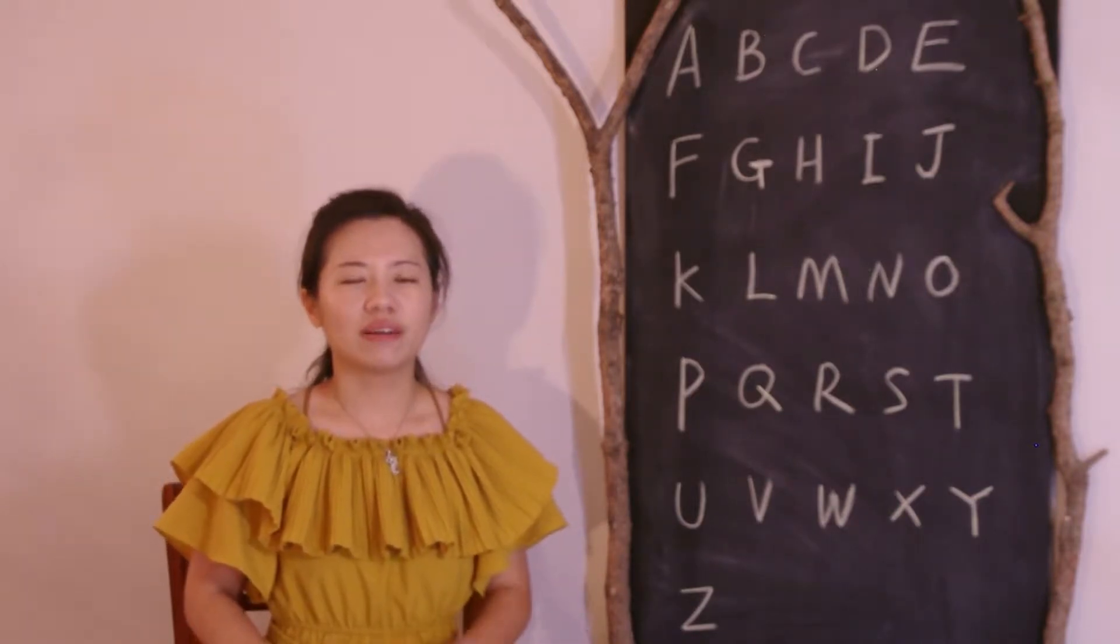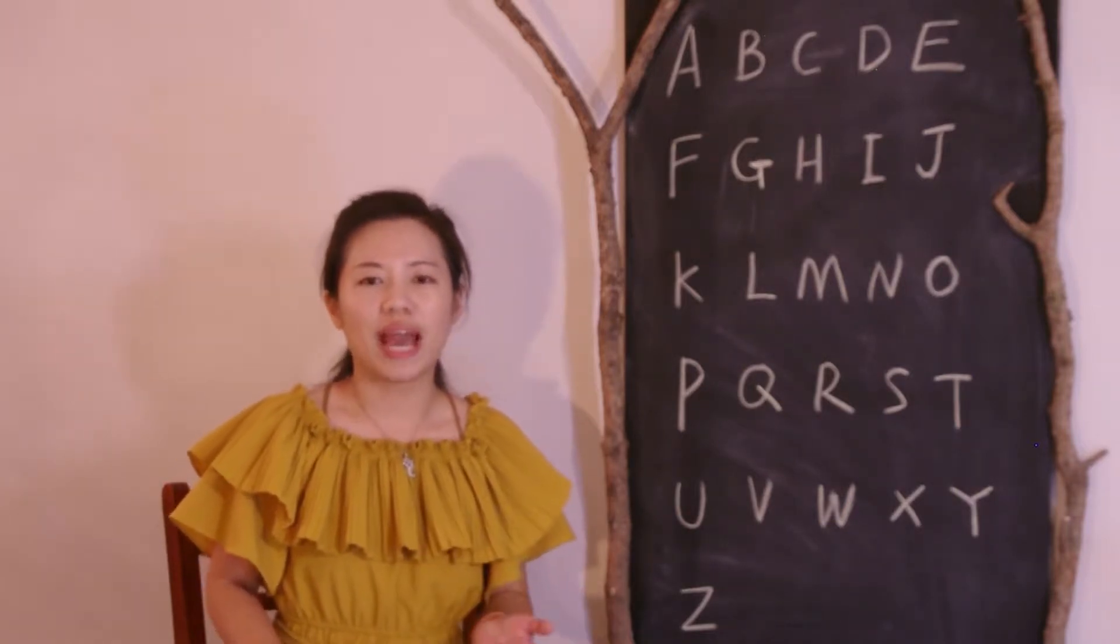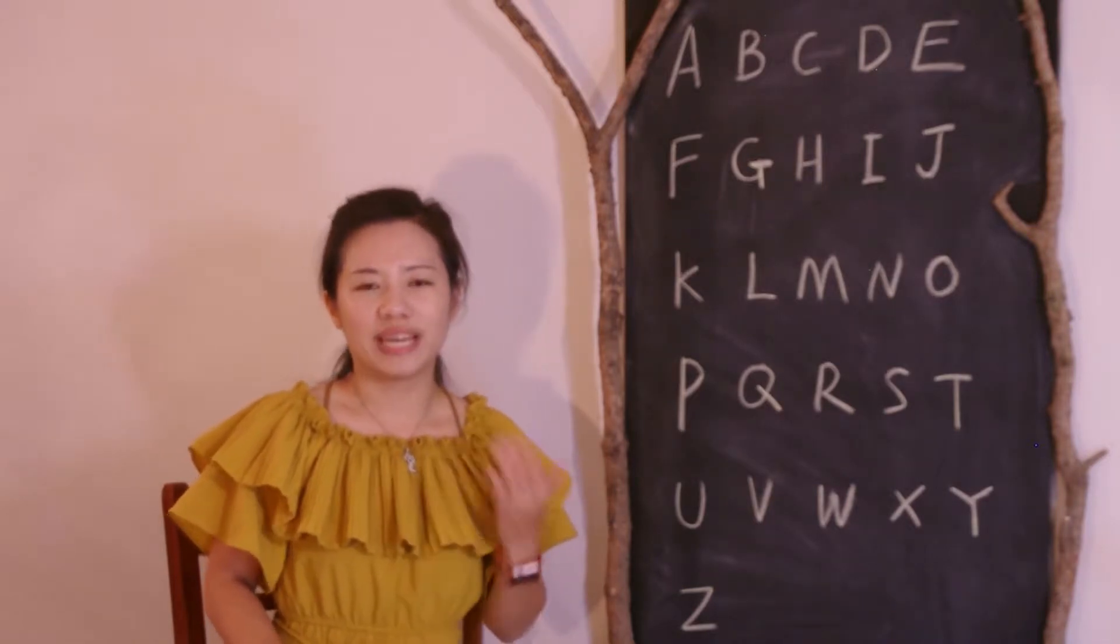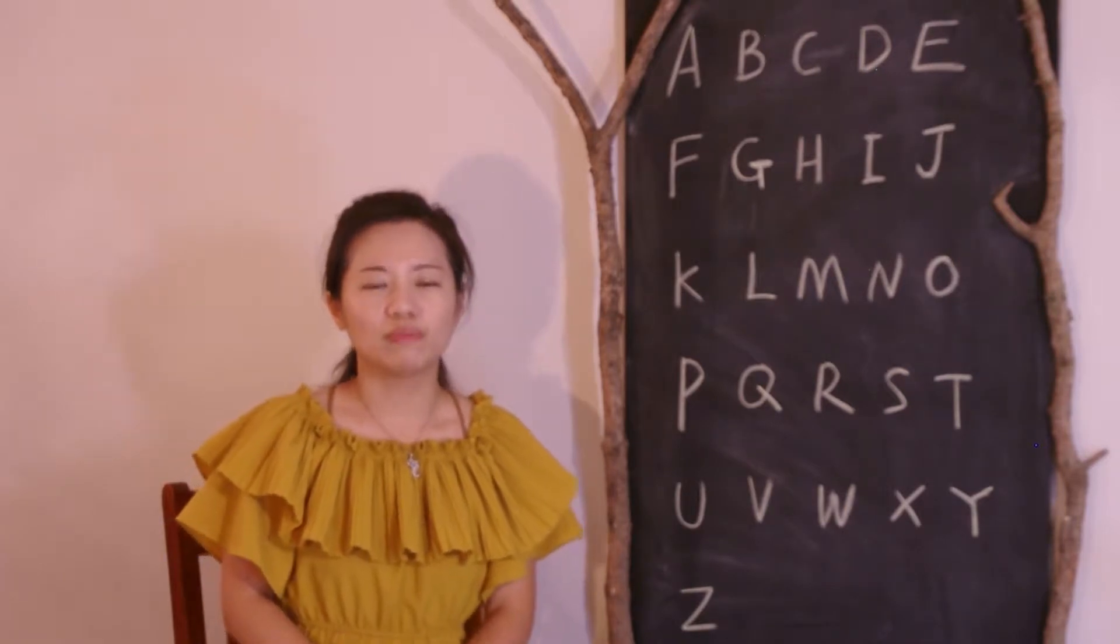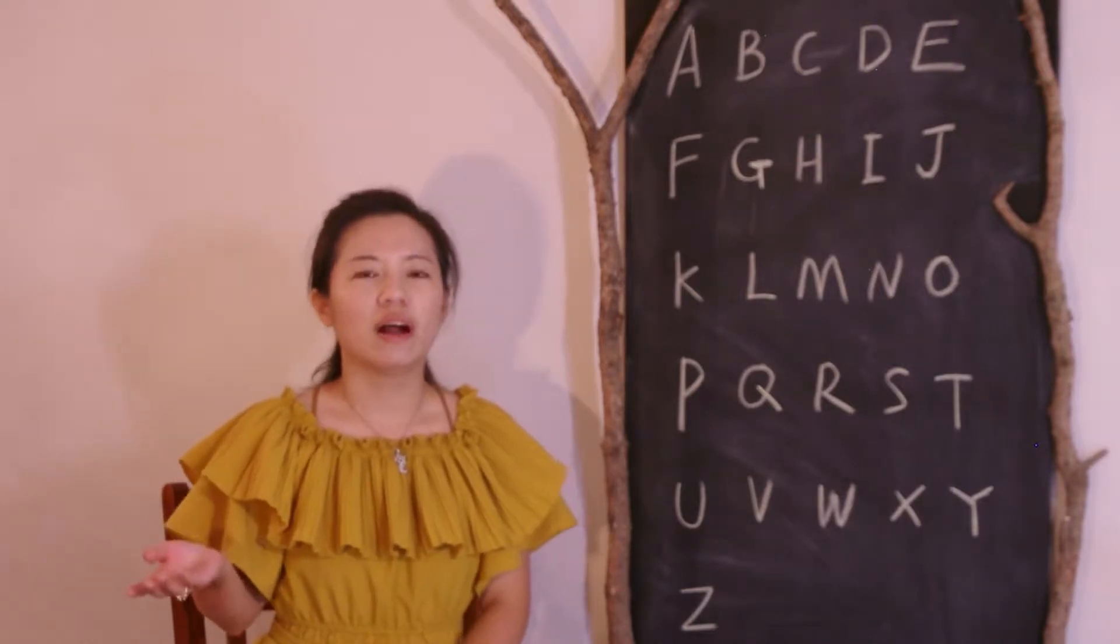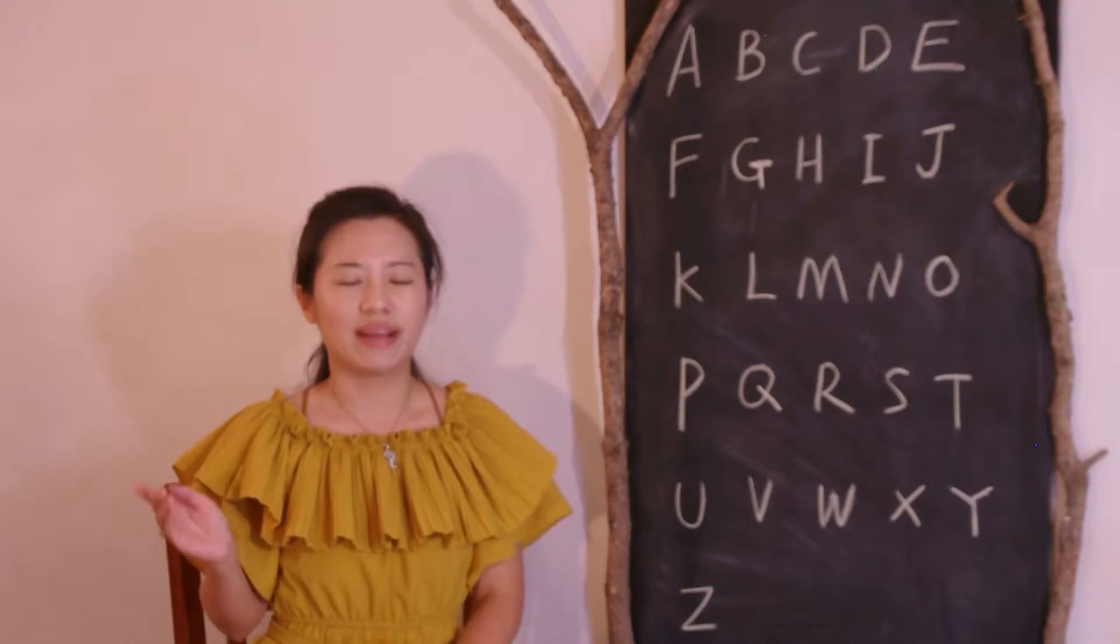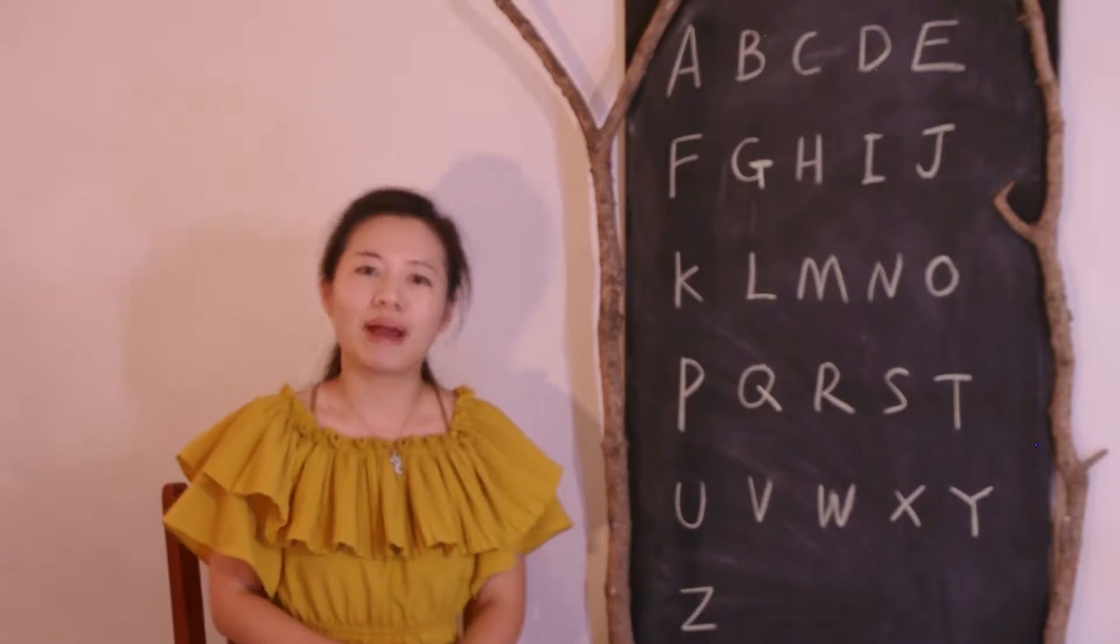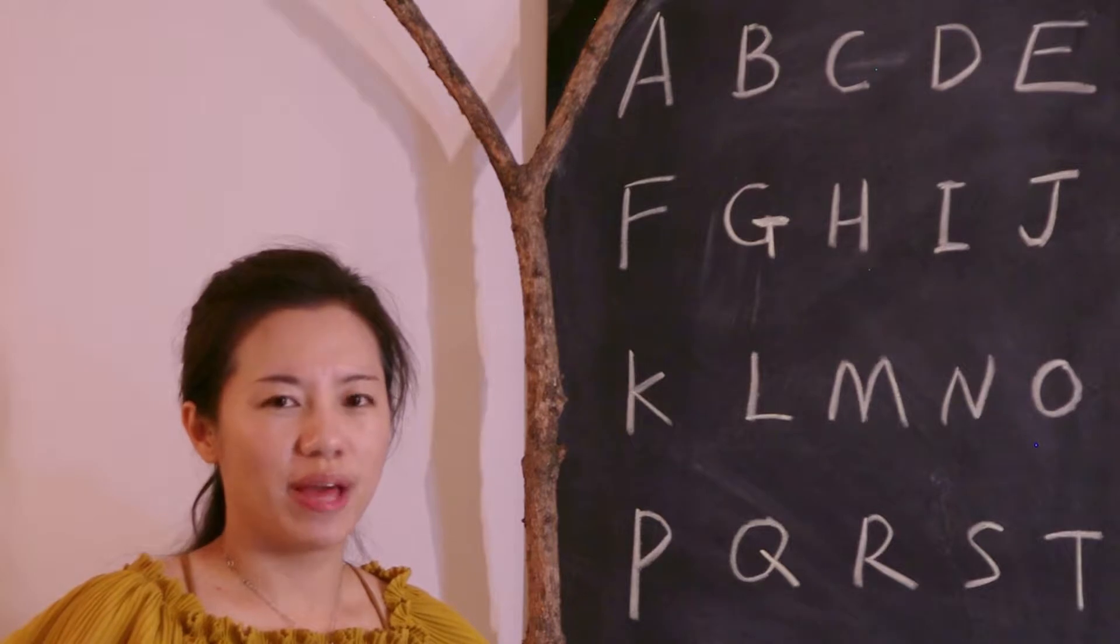So we're going to learn the English letters from A to Z. You're going to follow me and I'm going to pronounce the letters for both English and Chinese. So let's begin the name of the alphabet.